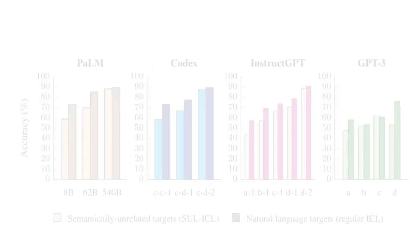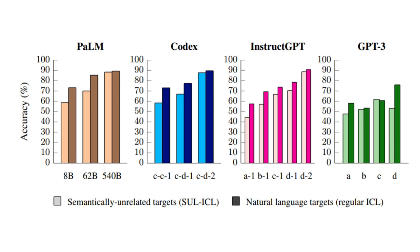The second hint that some sort of on-the-fly learning is occurring comes with the semantically unrelated target ICL experiment. In that setup, we have the various models and their variants doing a task either prompted with regular ICL or the semantically unrelated ICL.